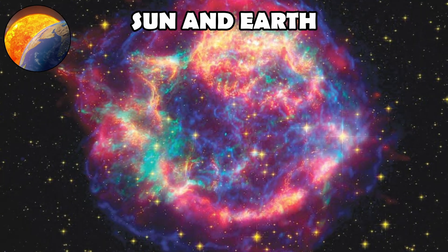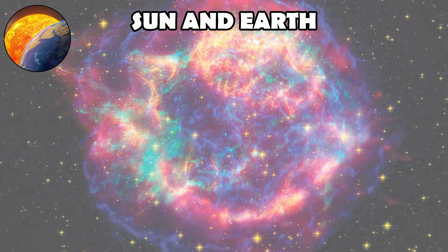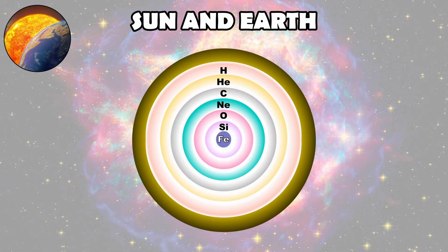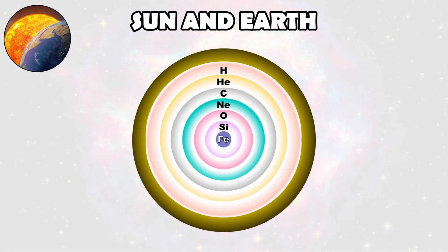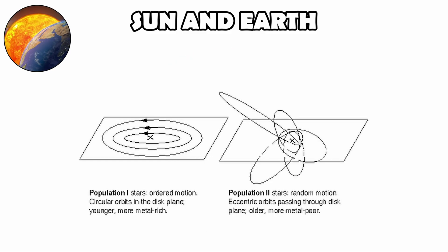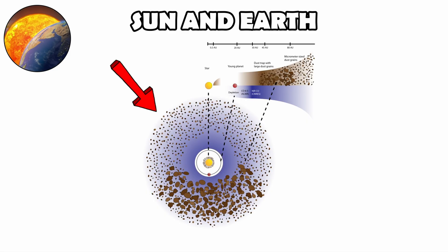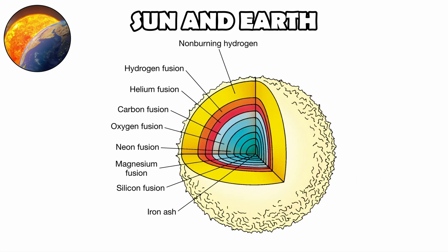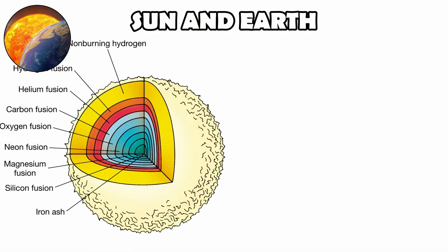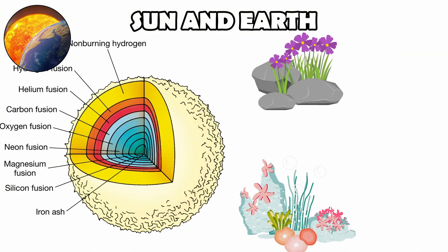By then, countless stars had already lived and died, enriching space with heavy elements like carbon, oxygen, silicon, and iron, elements forged in stellar interiors and supernova explosions. The Sun is a third-generation star, born from the debris of earlier stellar generations. Its surrounding disk of gas and dust gave rise to planets, including Earth. Without the billions of years of cosmic history before it, our planet would not have the chemical ingredients needed for oceans, rocks, or life.